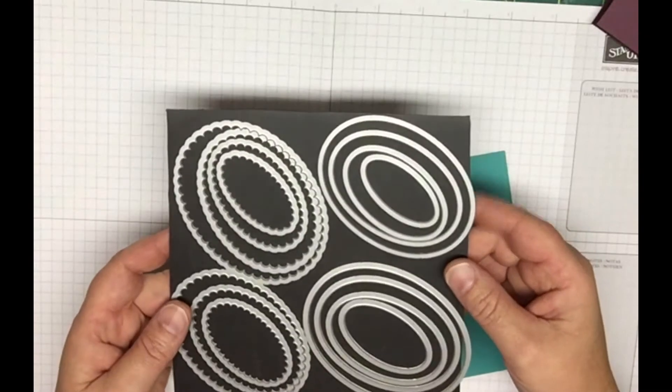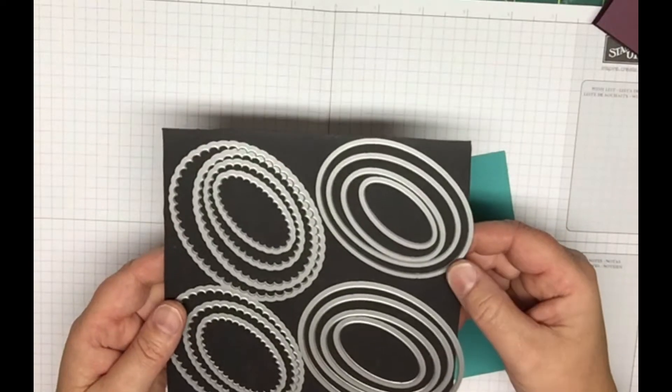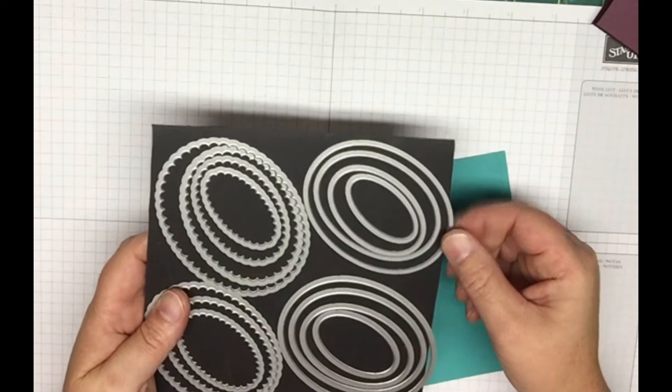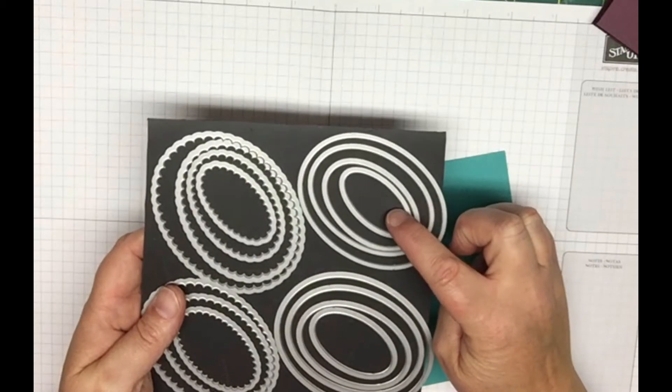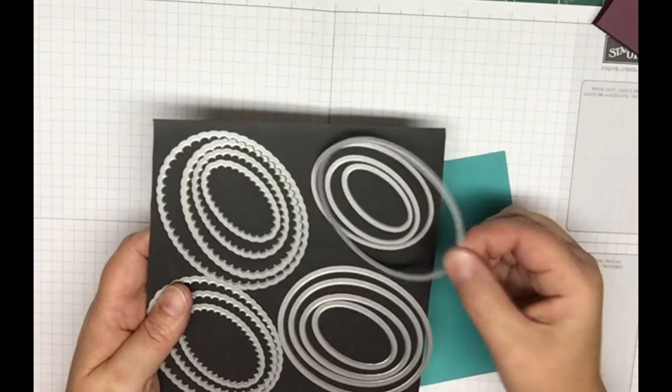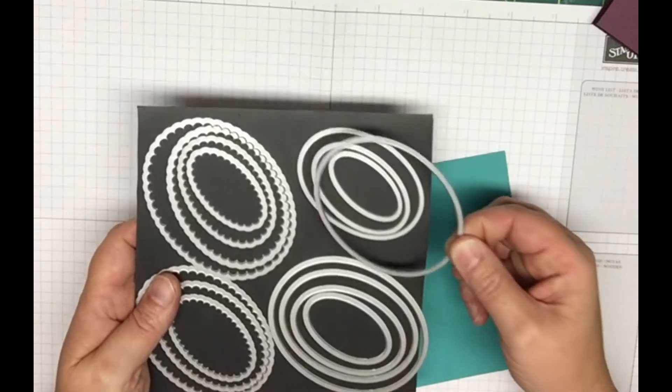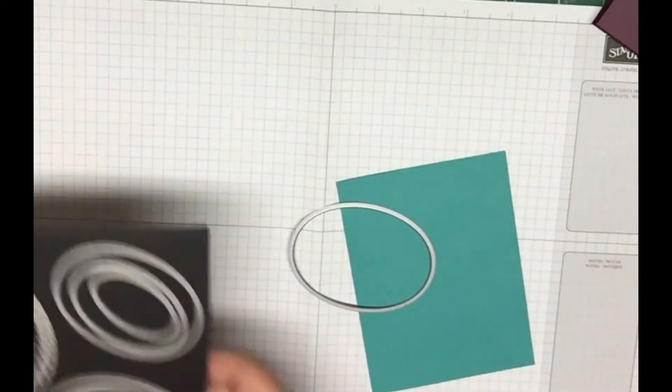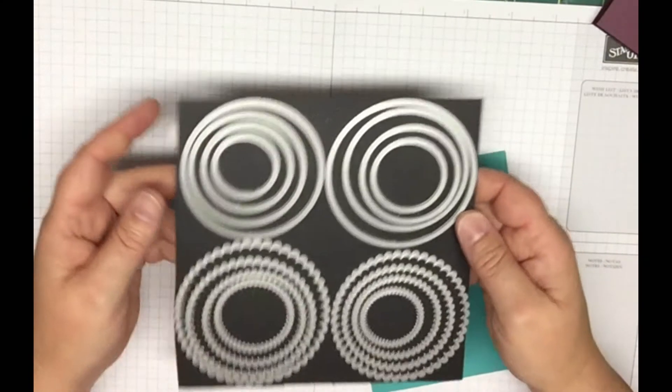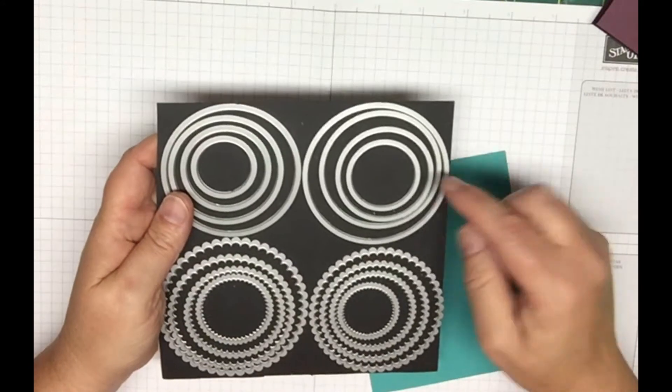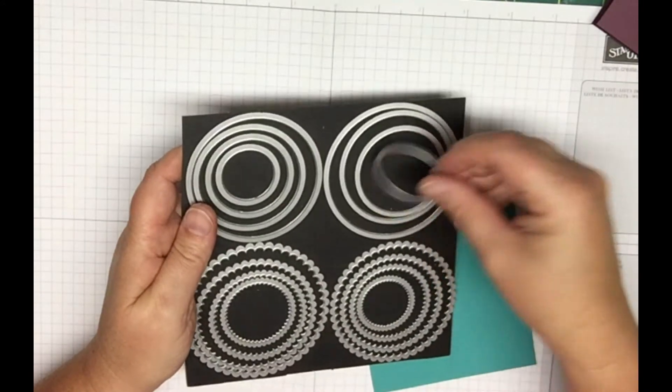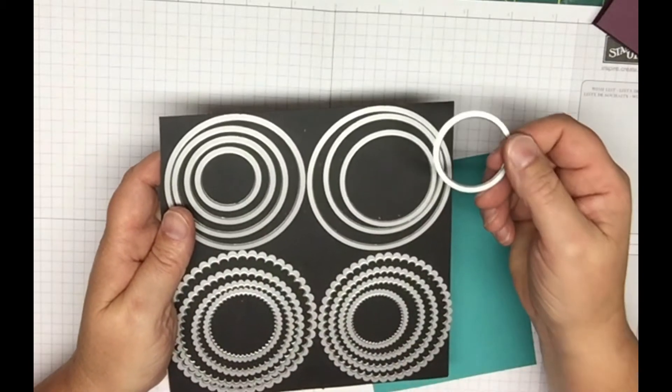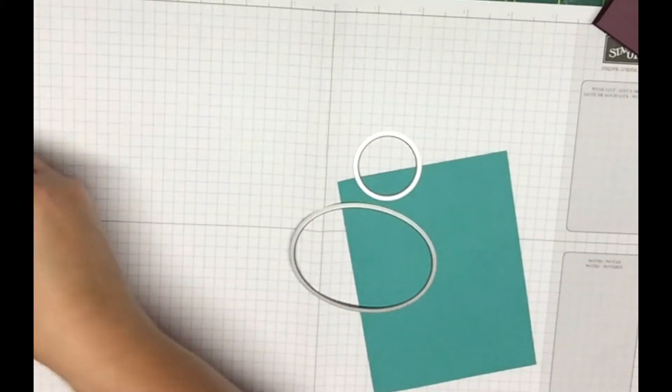So we're going to use out of the layering oval framelits, we're going to use the seventh smallest one. So I always count the smallest as my first one and count outwards. So this one here will be the one we're going to use. It's not the biggest, it's the next one in. So we're going to use that framelit and we're going to use out of the circling layering framelits the second one. Again I count down, this would be the smallest, this is the second smallest. So you're just going to use those two.